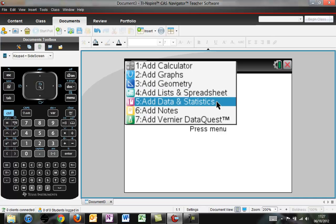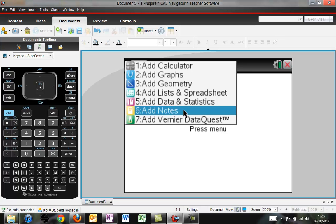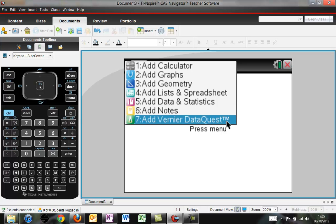Data and statistics would be more for graphs. Notes is literally just that, taking or showing notes. And the Vernier Data Quest is if we have any calipers or if we have any instruments that we can use to acquire data.